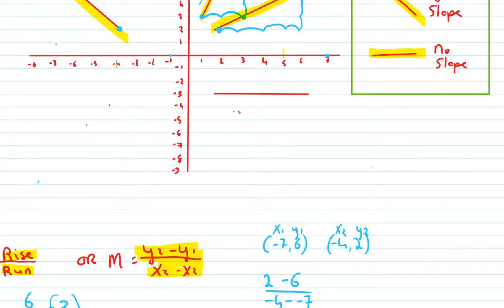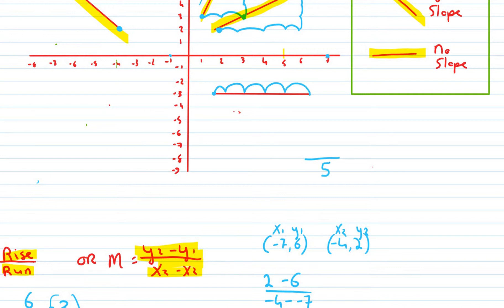Remember I said flat lines or horizontal lines have a slope of zero. Let's use the rise over run method. We'll run five spaces, and I don't actually have to rise at all — so it's zero. Zero over five is zero, so the slope is zero. If I did it with the formula method, I would still get zero. It doesn't matter which method you use.